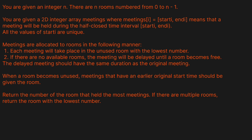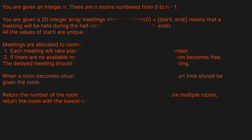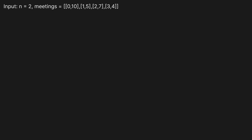This is basically like Meeting Rooms I and II except they've thrown a bunch of extra rules at us. There's not actually enough space here for me to do the example, so I'm going to wipe all this away and look at a practical example to get a feel for the problem. We have n equals two, so we have two meeting rooms.